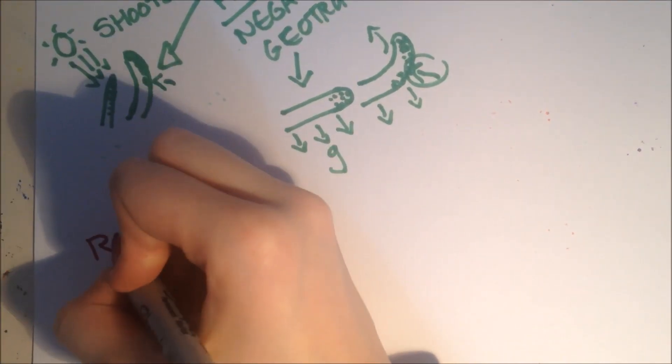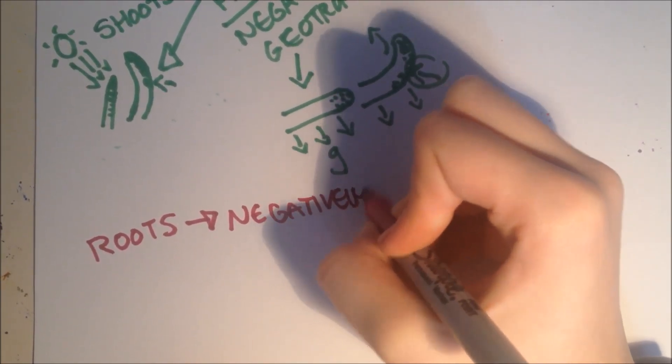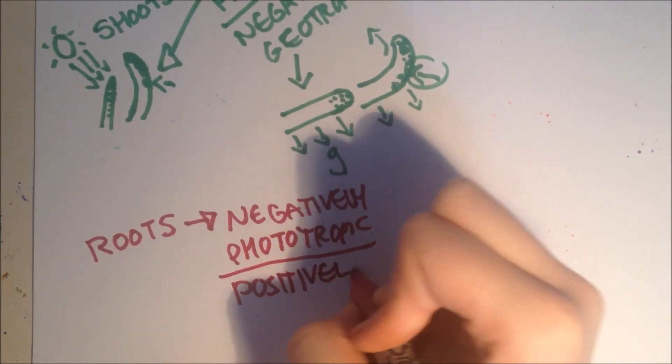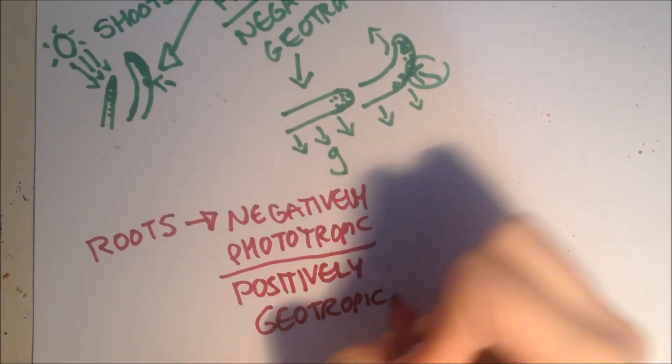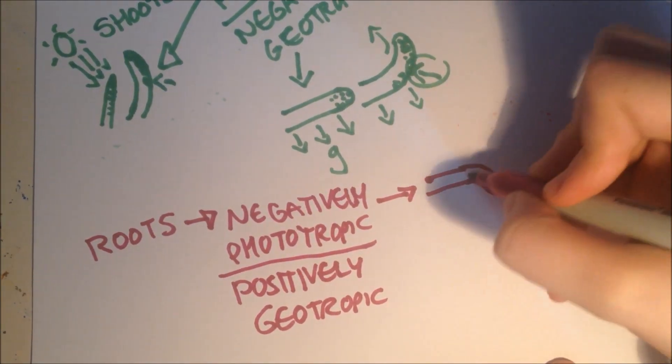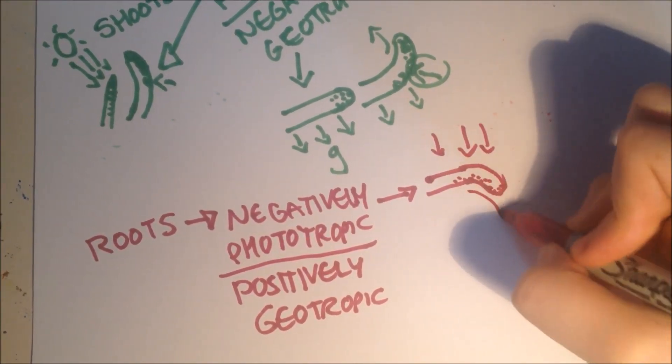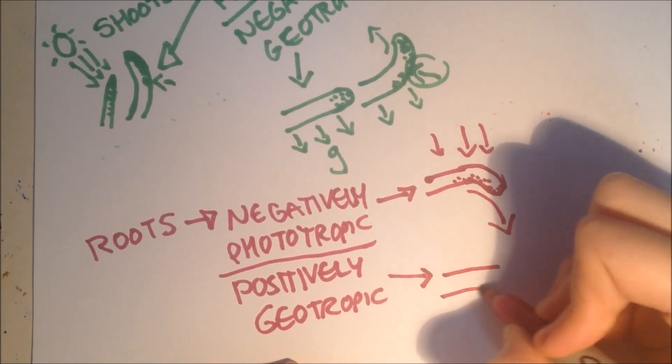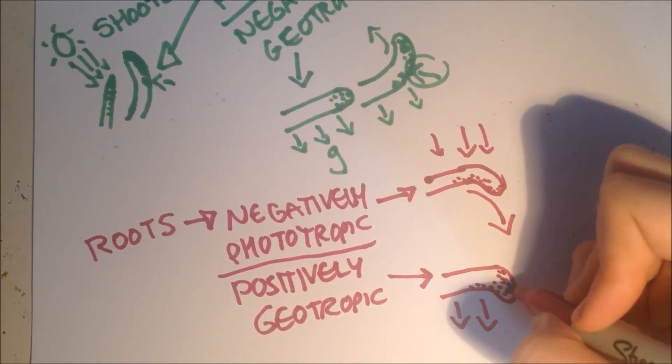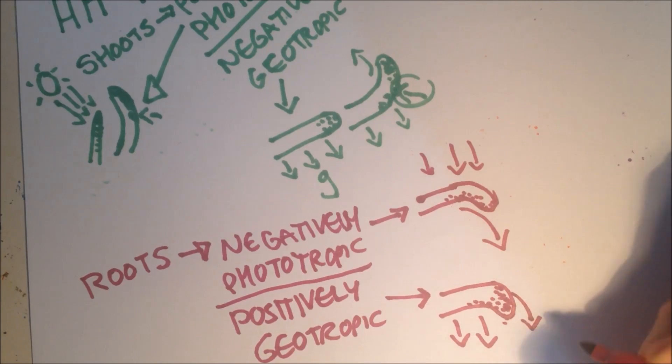There are similar things with the roots, but they're the opposite. For the roots, they are negatively phototropic and positively geotropic. So the root grows away from the light, there's more auxins on here, that's where the light's coming from. There's more on the shaded side, so it bends downwards into the ground. For the geotropic part, this is gravity. Because it's positively geotropic, it's positive towards gravity. The cells on the top elongate faster and the root bends downwards because there's more auxins on the lower side, so it travels this way.